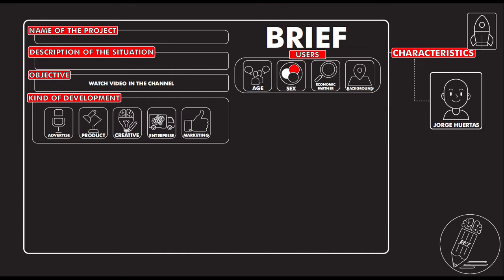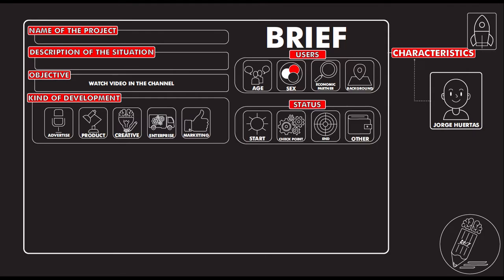It's very important to know what status the development is in, because sometimes you don't start from the beginning — you start from a checkpoint, from the middle. Maybe there's something previously done, or it's almost done, or there are other characteristics. This way we know from which point we are starting.